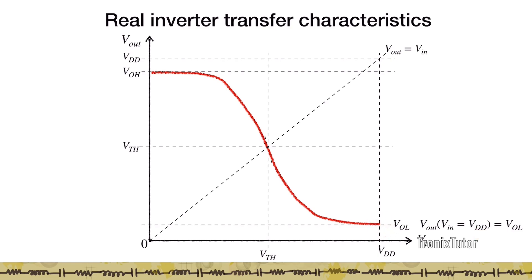Even though the input is swinging between 0 and Vdd, the output is going to swing only between VOH and VOL. If you've designed a circuit this way, the output voltage swing is less than the input voltage swing, which in the long run is not healthy because it reduces the noise margin. In the ideal case, you want the output swing to equal the input swing, so that when we cascade such circuits, we have no issues with Boolean logic being transferred from stage 1 to stage 2.